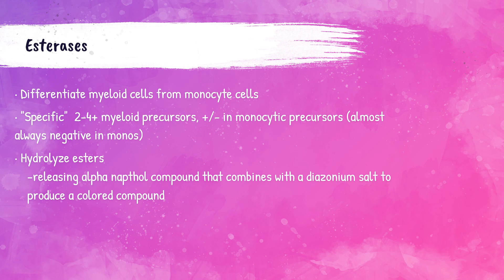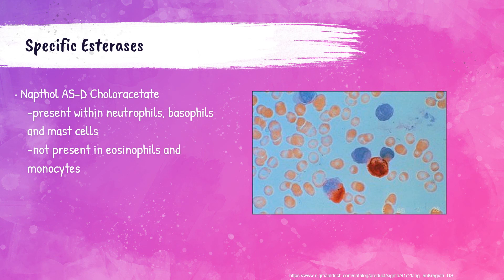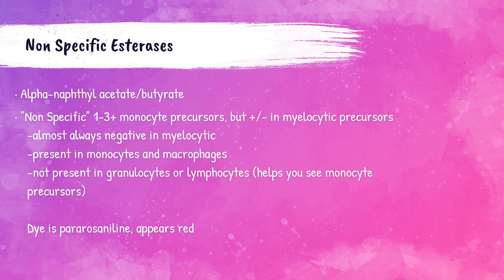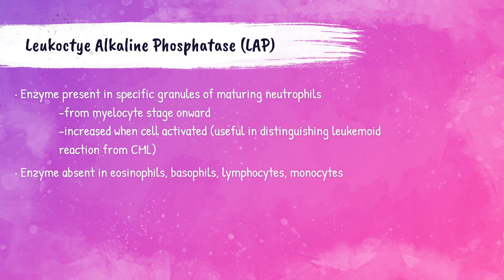Esterases are enzymatic cytochemical stains that differentiate between myeloid cells and monocytes. The specific esterase stain uses the substrate naphthol ASD chloroacetate esterase, detecting esterase enzyme in primary granules of neutrophils, basophils, and mast cells; it is always negative in monocytes and will not stain eosinophils. The non-specific esterase stain uses substrates alpha-naphthol acetate and alpha-naphthol butyrate to stain esterase present in monocytes and macrophages, but not in granulocytes or lymphocytes; the dye appears red when positive.